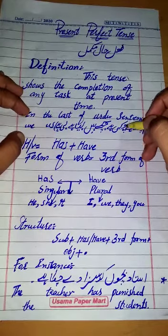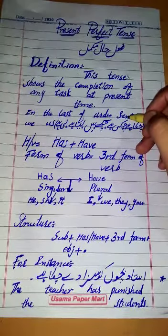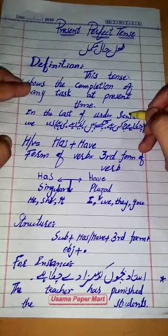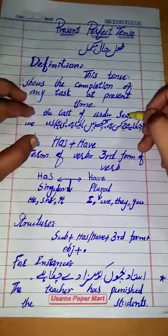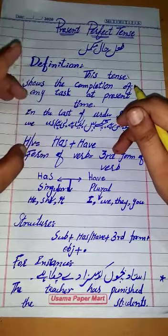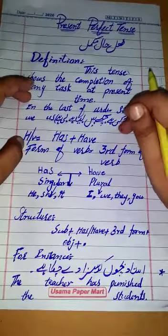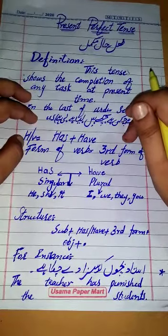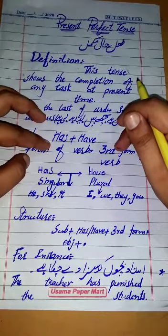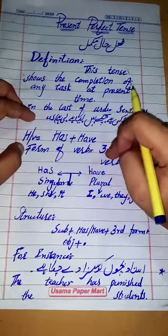Now, which helping verbs will we use in present perfect tense? In present continuous tense there were three helping verbs. Remember, without a helping verb we cannot create a sentence — it is incomplete. The helping verbs for present perfect tense are 'has' and 'have.'